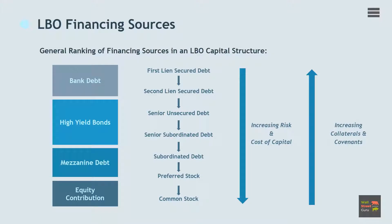We have grouped the primary types of LBO financing sources into the categories shown here, corresponding to their relative ranking in the capital structure. However, the debt portion of the LBO financing structure may include a broad array of loans, securities, or other debt instruments with varying terms and conditions that appeal to different classes of investors.